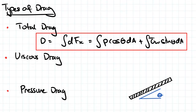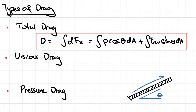There are two main types of drag that sum together to give us our total drag acting on a body: viscous drag and pressure drag. Viscous drag is associated with the friction of a fluid on a surface. It occurs parallel to a surface and is essentially related to our wall shear stress tau w, and to get that force we simply multiply it by the area that it acts over.